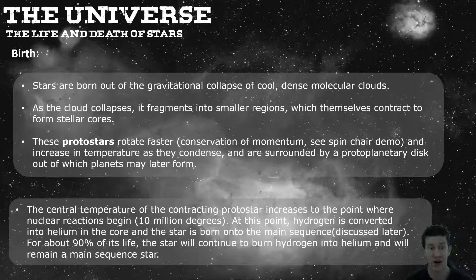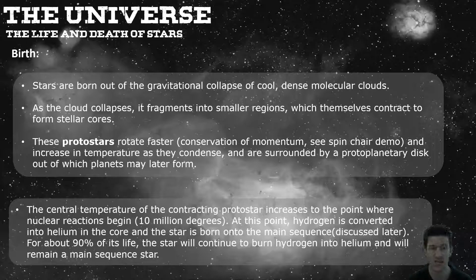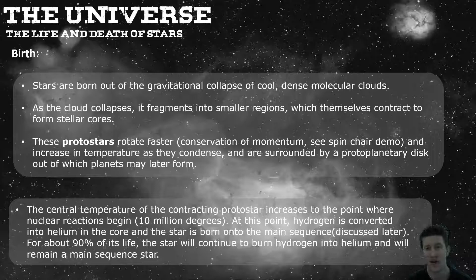As all of these things contract, compressing them makes them very hot — reaching around 10 million degrees Celsius, because the gases become so dense and compact. At 10 million degrees we can actually convert hydrogen into helium through nuclear fusion. This is where the star is first born and jumps onto the main sequence, where most stars spend 90% of their life.